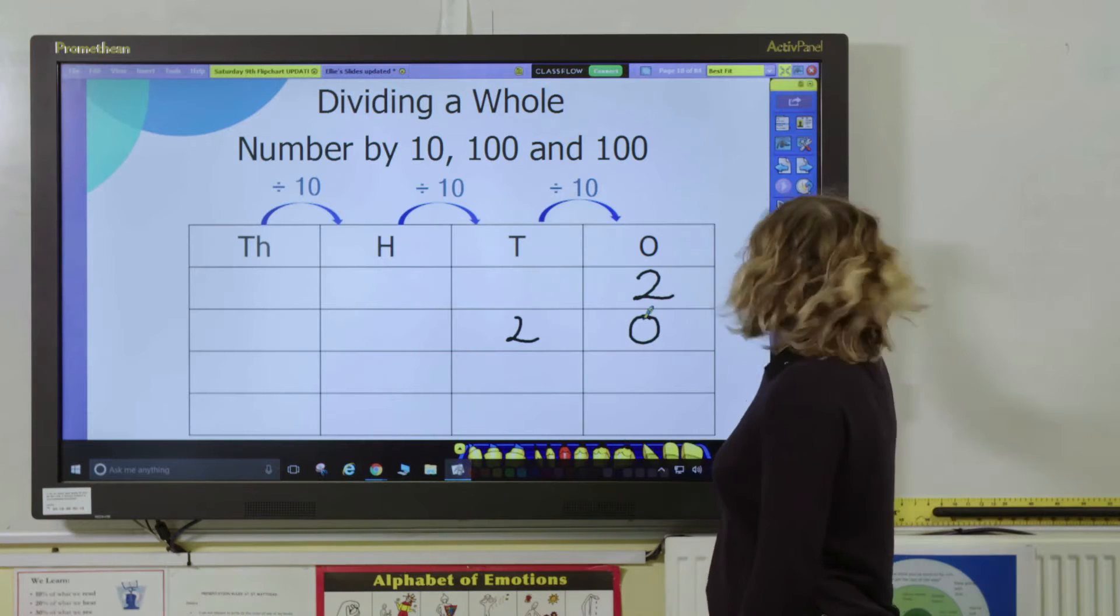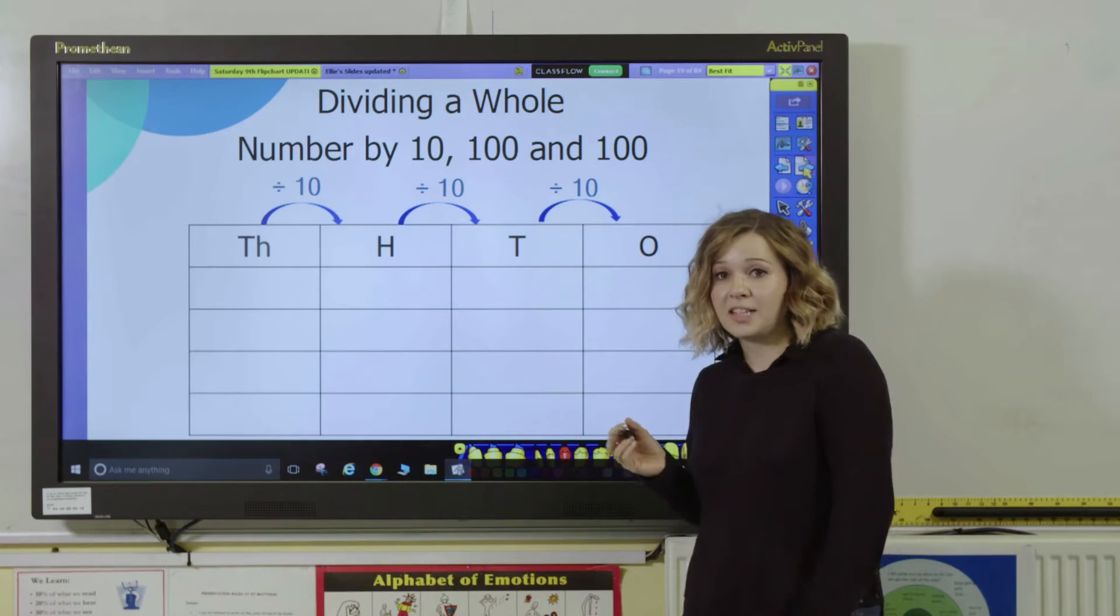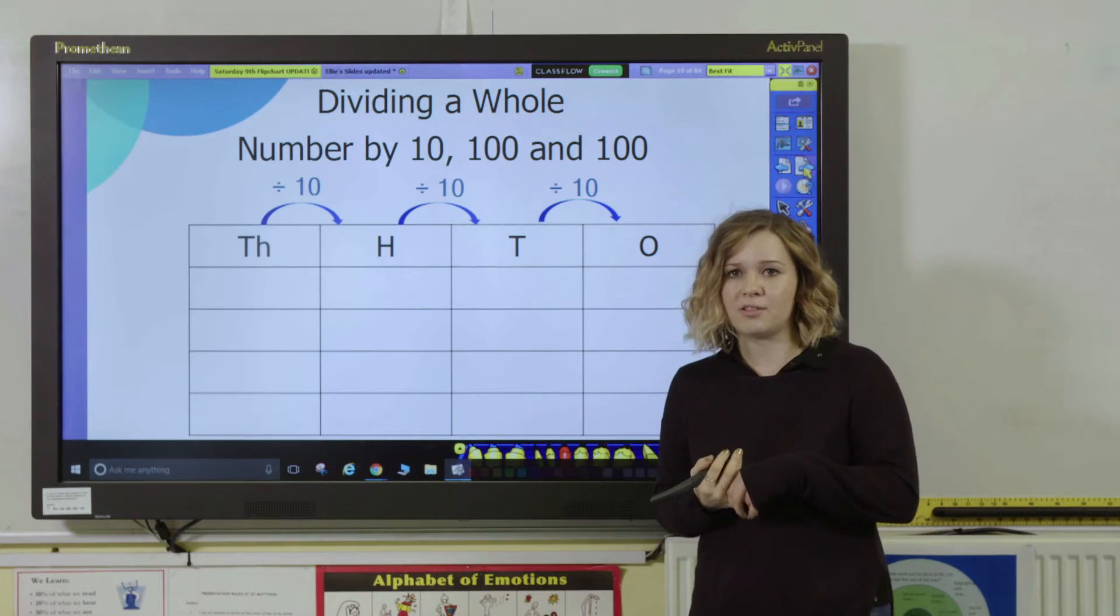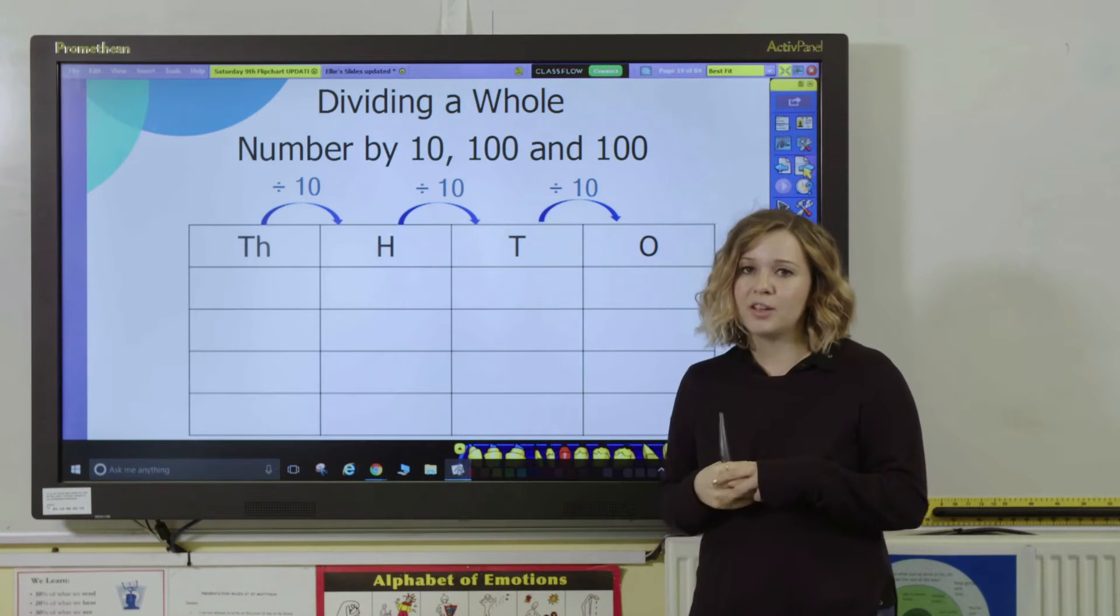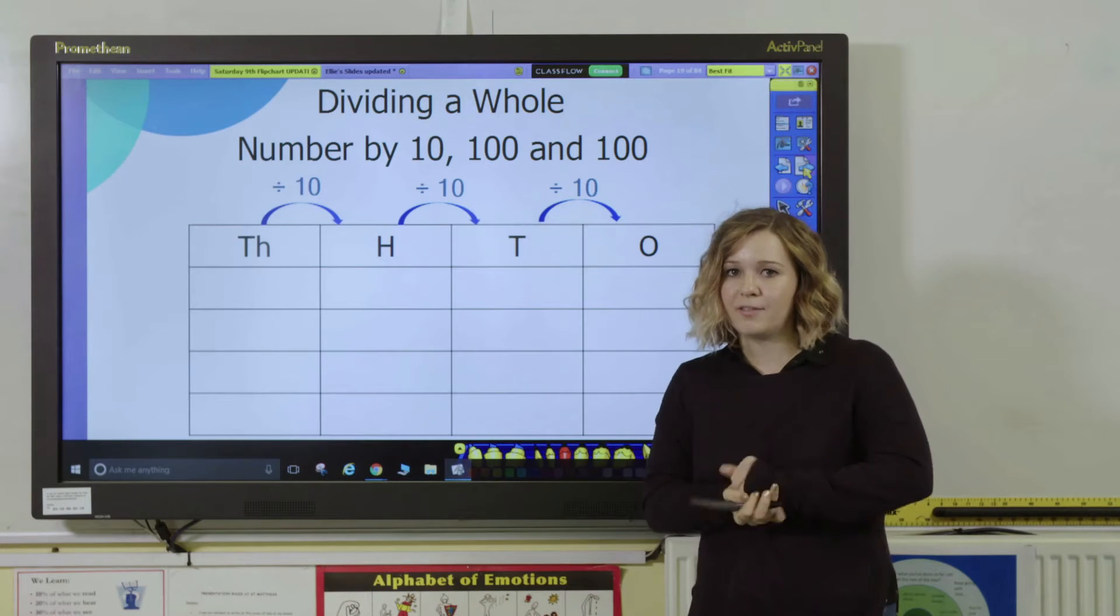Now you want to link that understanding to division. So pupils need to understand that when they're dividing by ten, hundred, and a thousand, the inverse is happening. So rather than the digits moving to the right, they're actually going to move to the left.